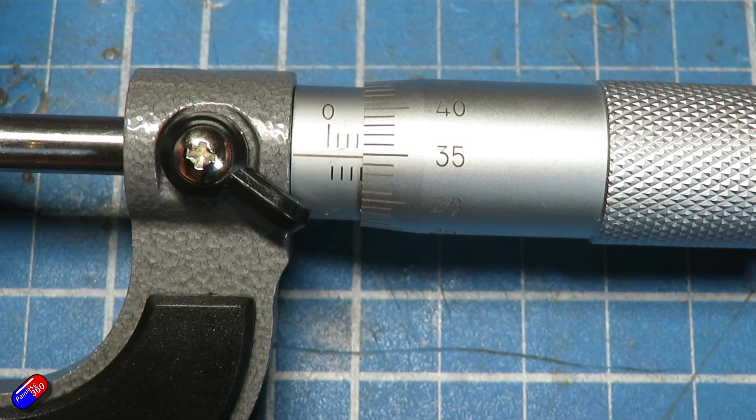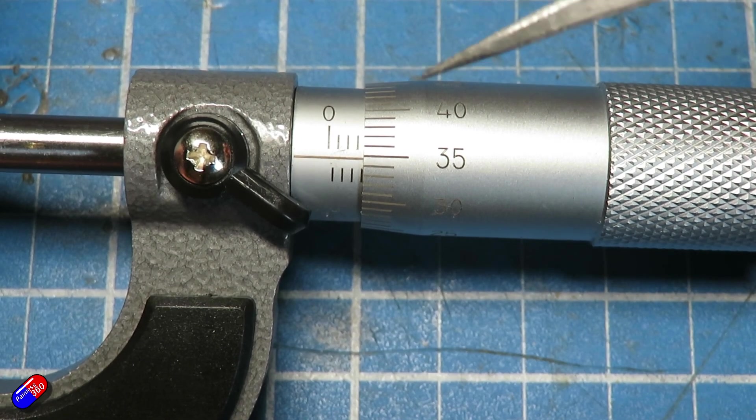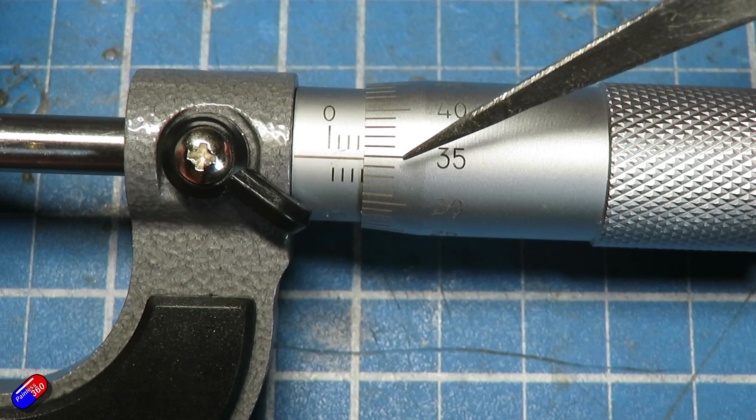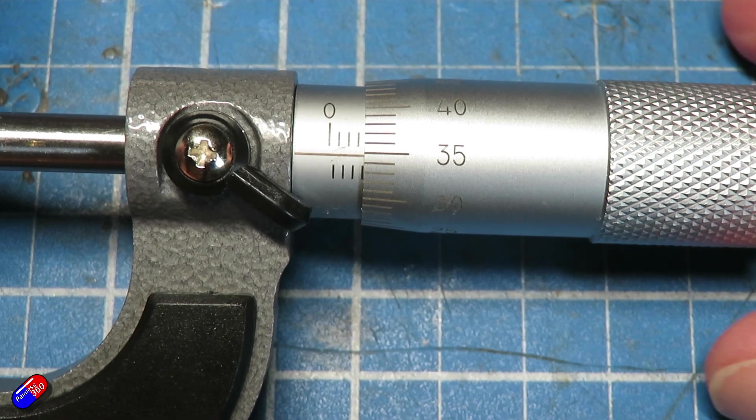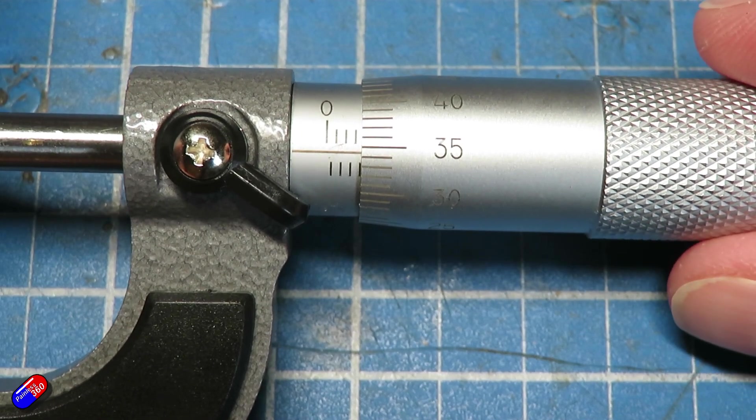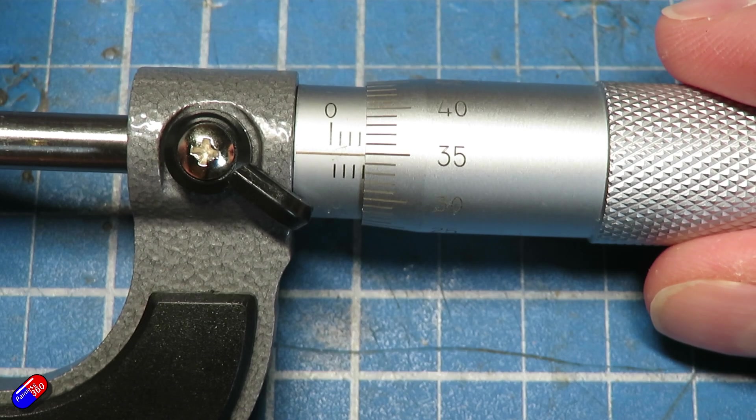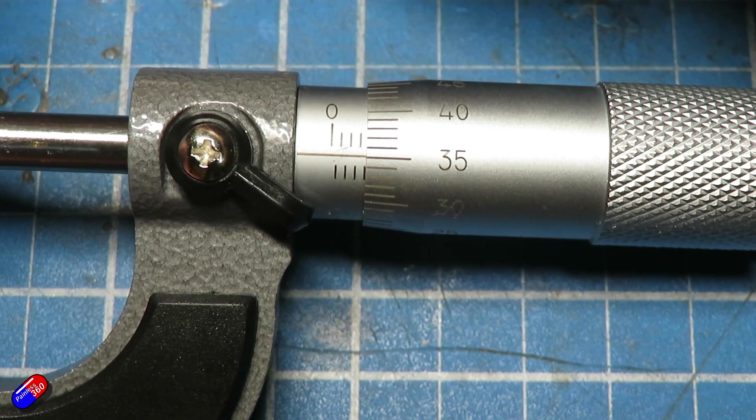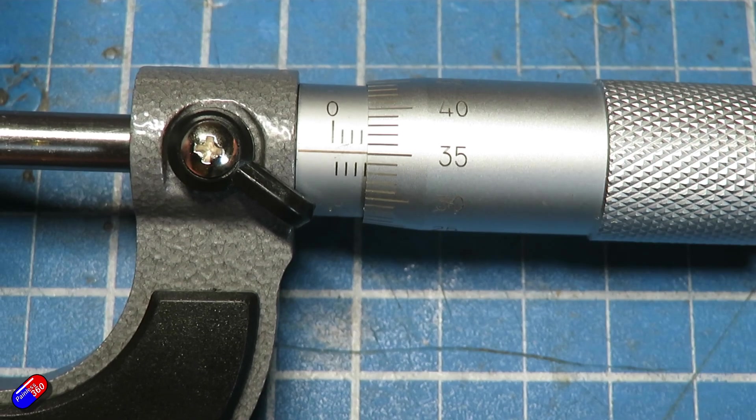Actually it's slightly less, so I would say it's 3.355 millimeters because that line is in between the one above and below it. 3.35 would be exactly there and that's not quite catching it - it's a little bit less.